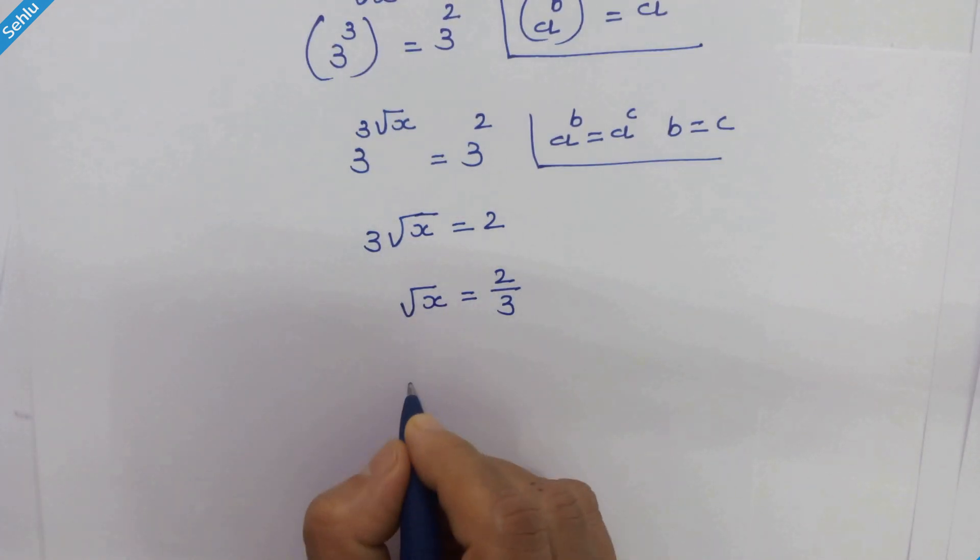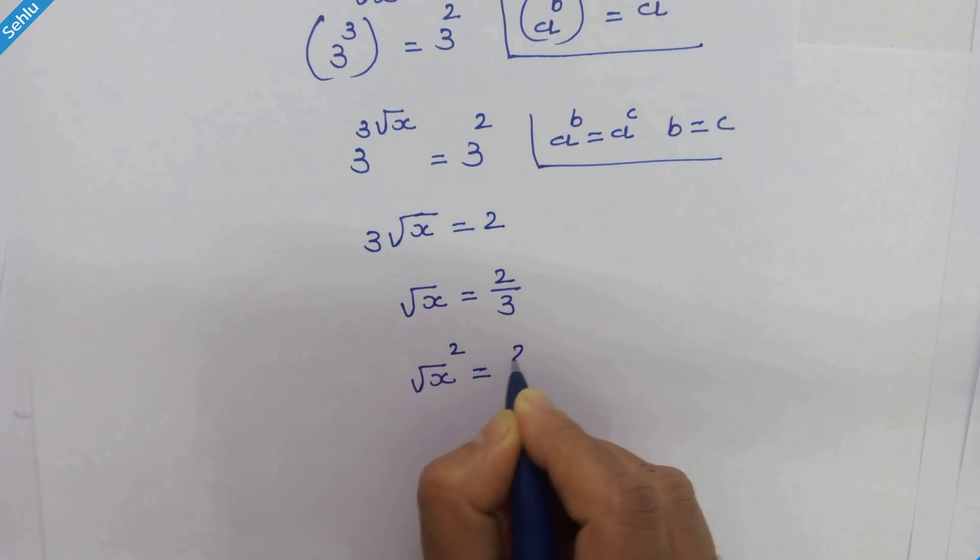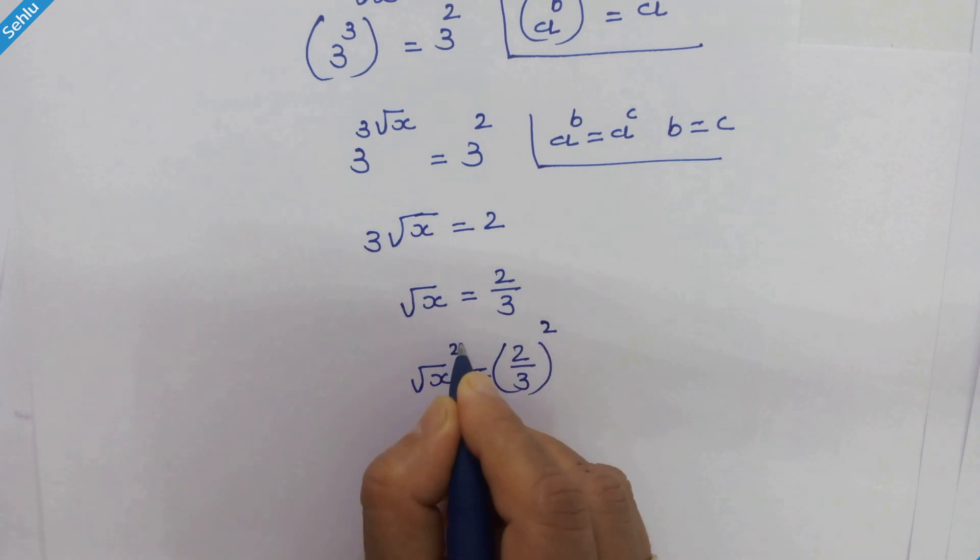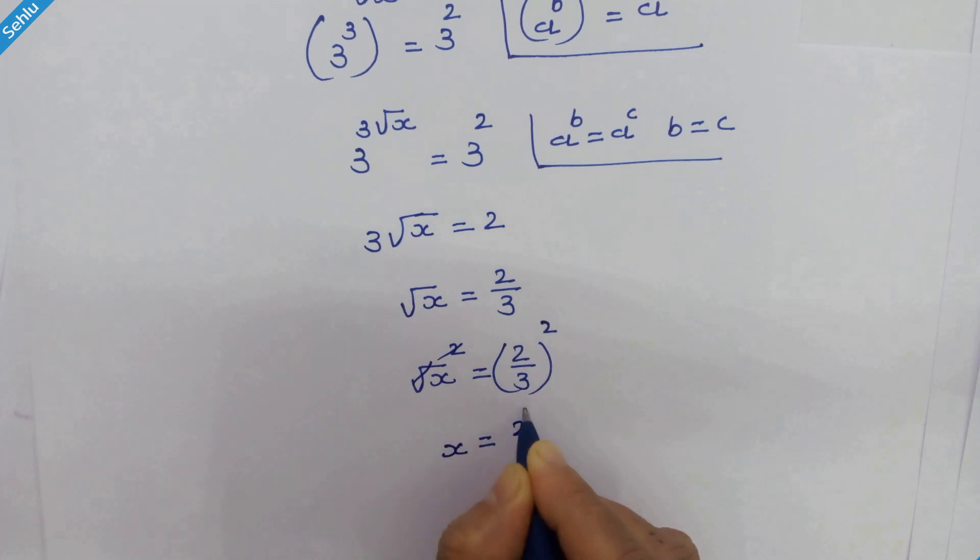Squaring both sides, we have square root of x squared equals 2 upon 3, whole squared. The square and square root cancel out, so we have x equals 2 squared.